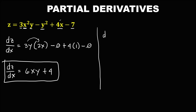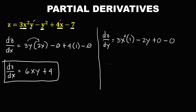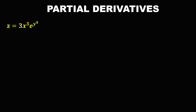For the derivative of z with respect to y, we assume that x is a constant. Bring down this constant first, so we have 3x squared times the derivative of y, that's 1. Then minus the derivative of y squared, that's 2y. For the remaining terms, since there is no y, these are constants and the derivative of a constant is 0. To simplify, dz over dy equals 3x squared minus 2y.